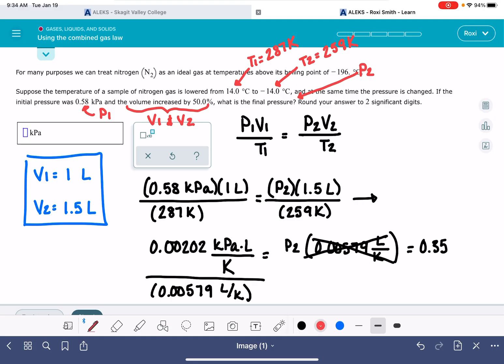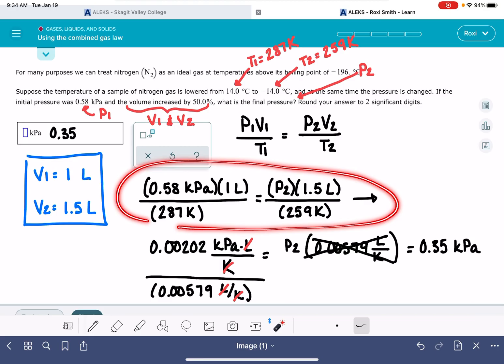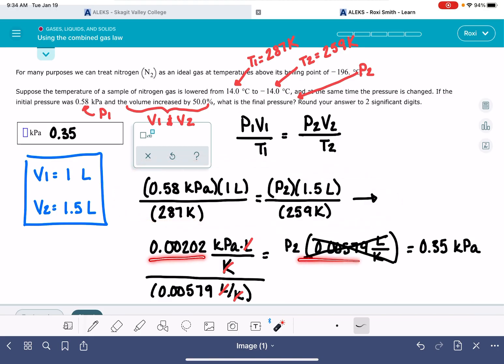And let's take a look at our units. The liters cancel, the kelvins cancel, we end with units of kilopascals. 0.35. And again, like I said, I would suggest doing all of the math here all in one step, not stopping, dividing and rounding in those intermediate calculations, because that could cause this answer to be a little bit off.